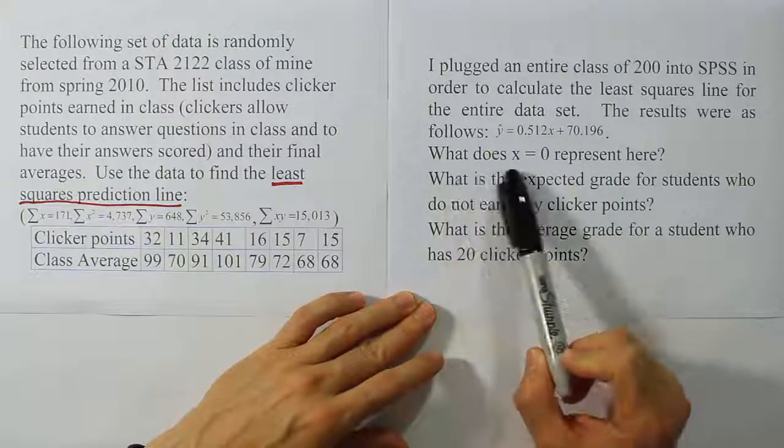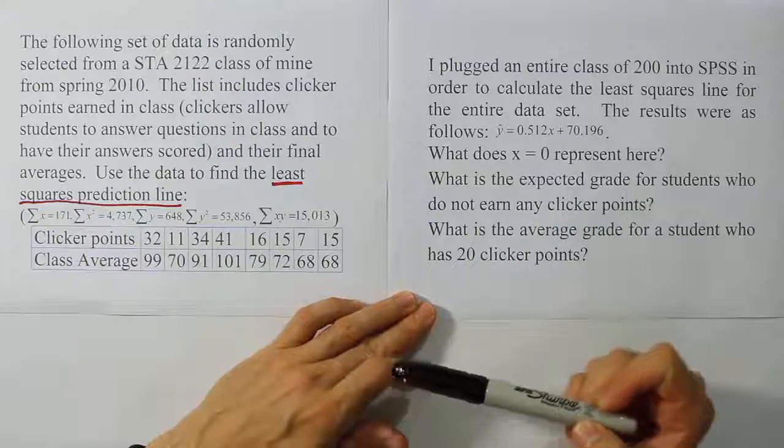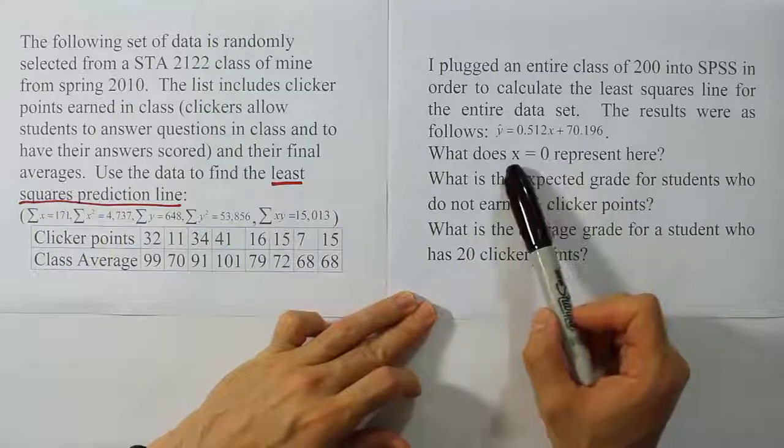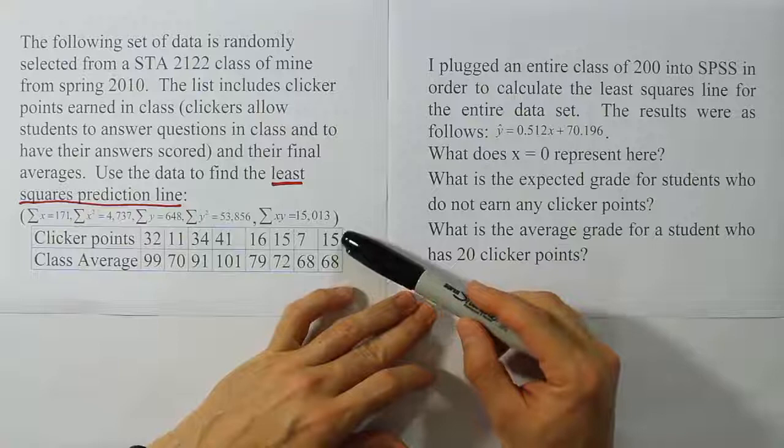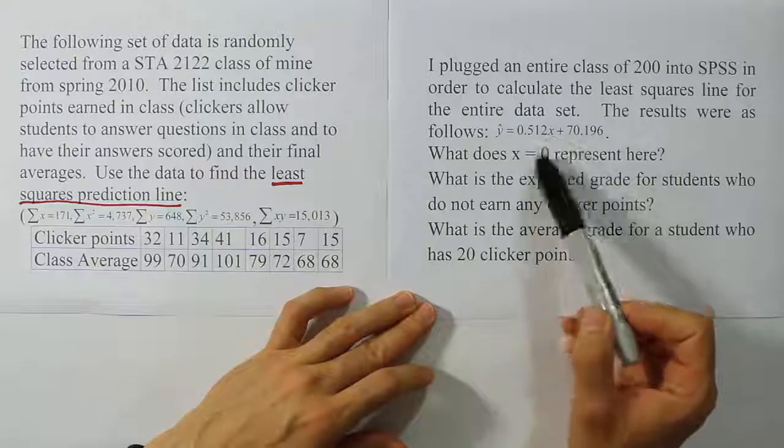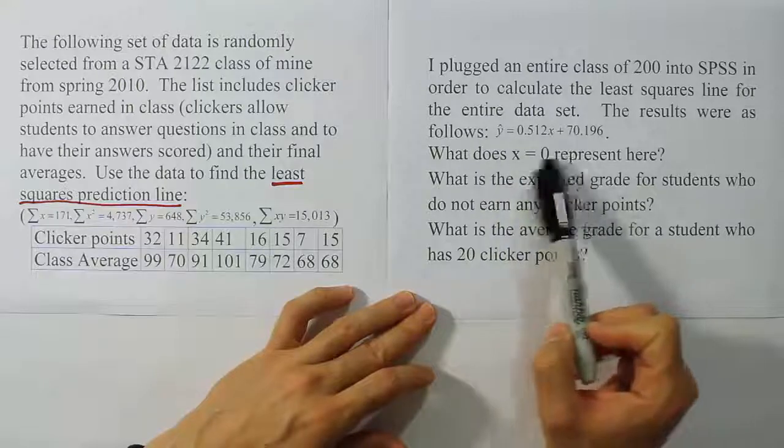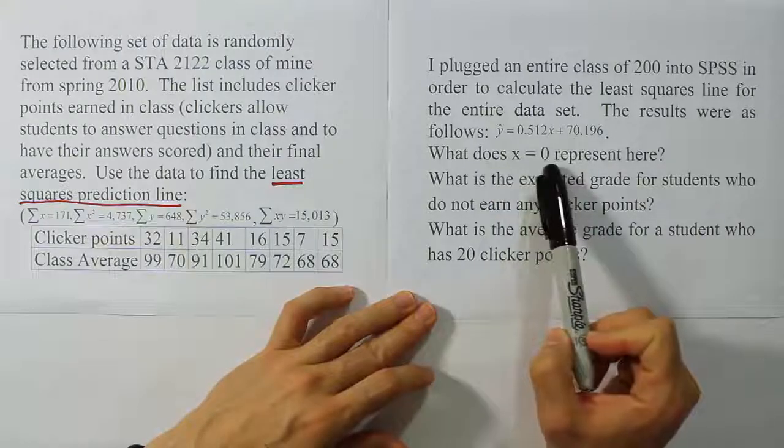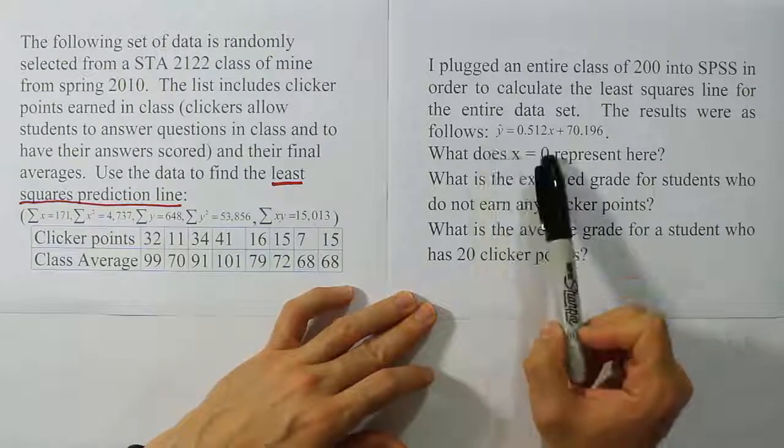The first question they ask us is, what does X equals 0 represent here? Well, if you think about it, X was the clicker points. It was the values that we used for the clicker points. If we were to say that X equals 0, it means a student did not earn any clicker points. That's what X equals 0 represents. It represents no clicker points.